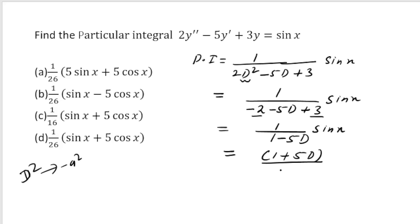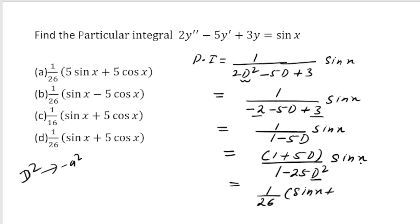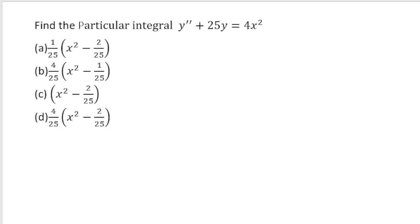Continuing: (1/26)(1+5D) operating on sin(x). This gives (1/26)[1·sin(x) + 5D·sin(x)] = (1/26)[sin(x) + 5cos(x)]. So PI = (1/26)(sin x + 5 cos x). Option d is correct.